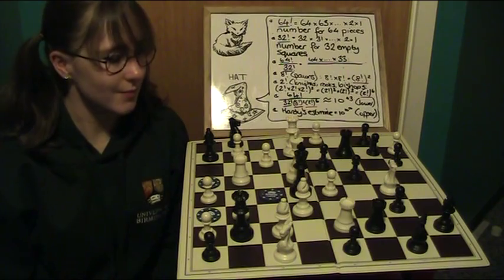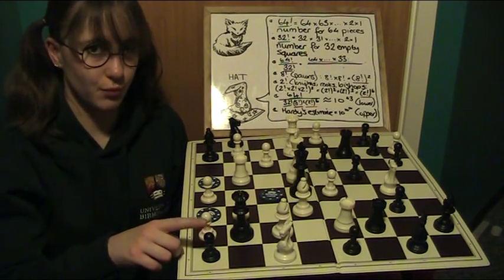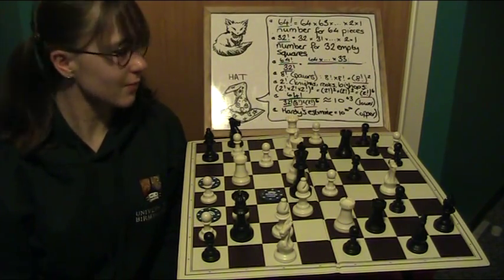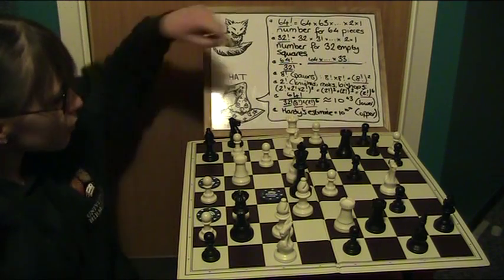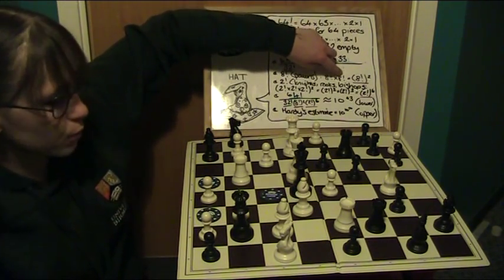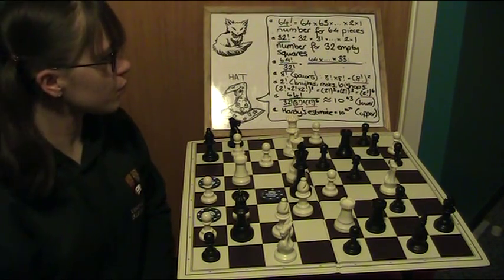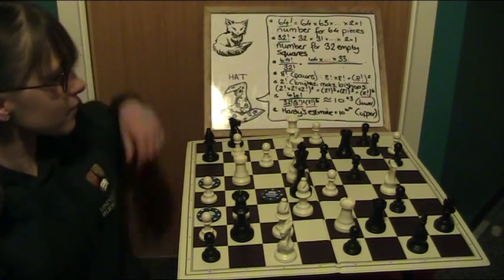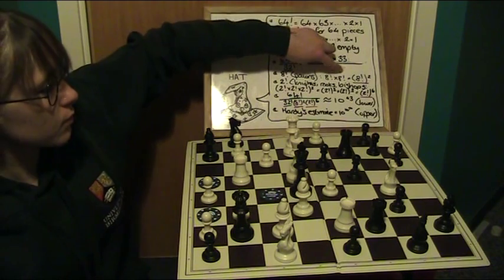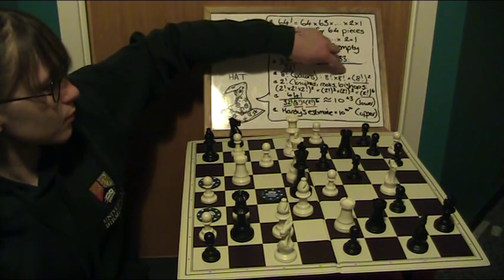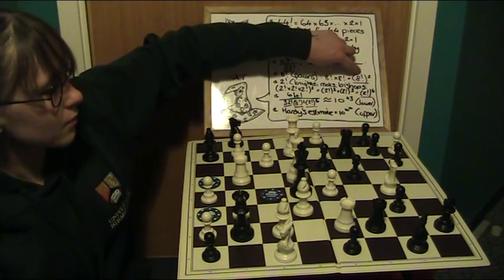However, we have 2 players. So we multiply 8 factorial by 8 factorial for the white and the black pieces. Notice from earlier on in the video that we have 2 lots of the same number multiplied by itself. And so we have 8 factorial raised to the power 2 or rather 8 factorial squared.